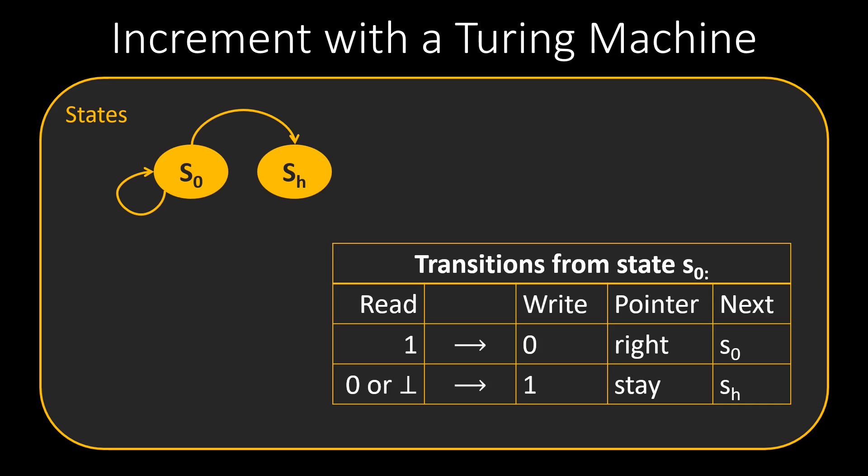If we read a 1, we write a 0 and move the pointer 1 cell to the right. We stay in state S0 because the incrementation is not finished yet. If we read a 0 or a bottom, we write a 1 to the cell and halt.